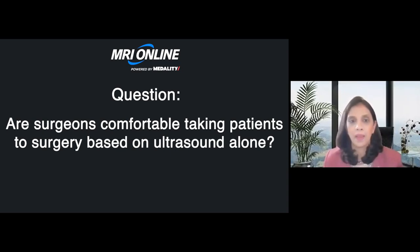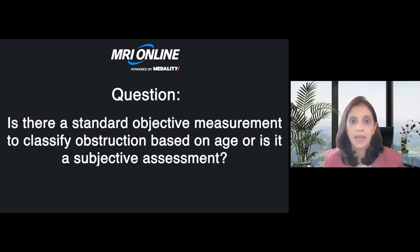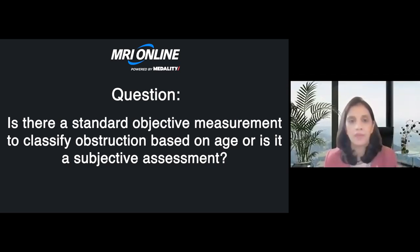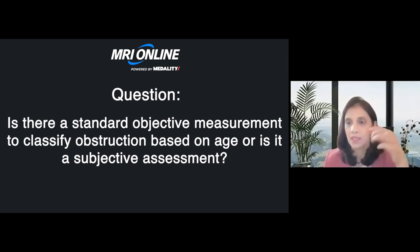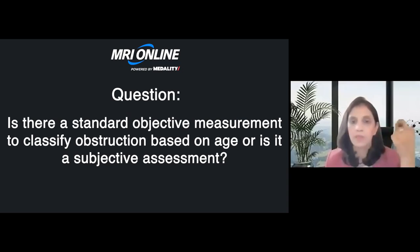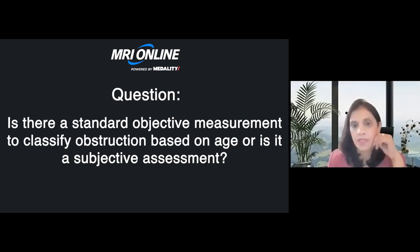Regarding bowel obstruction seen in intussusception or general pediatric cases: is there a standard objective measurement to classify obstruction based on age, or is it subjective? We already discussed the numbers — more than three millimeters or more than four millimeters for wall thickness. For intussusception you can see the target sign and the sandwich sign; it's essentially a subjective assessment.